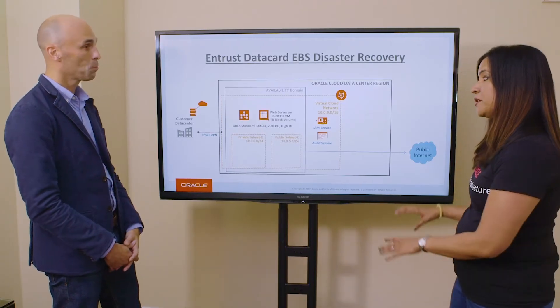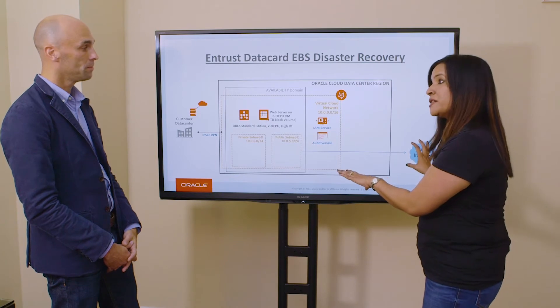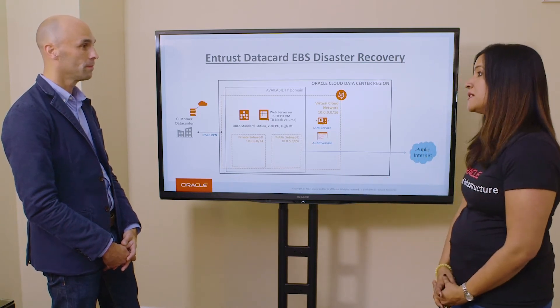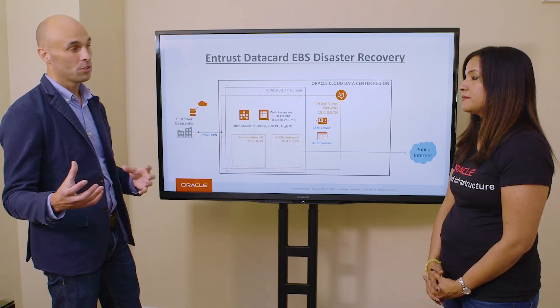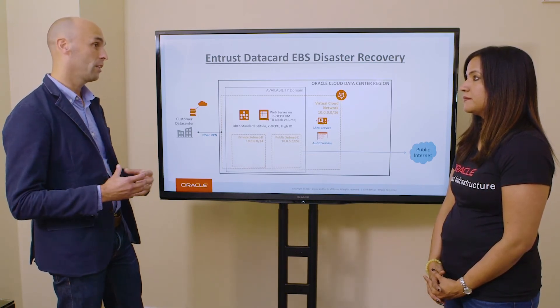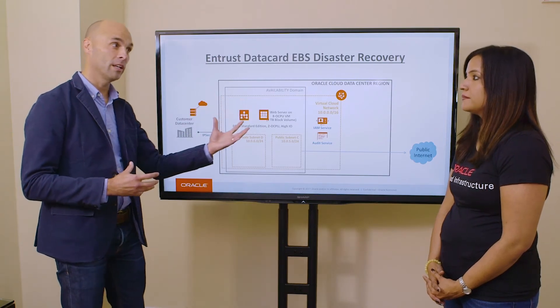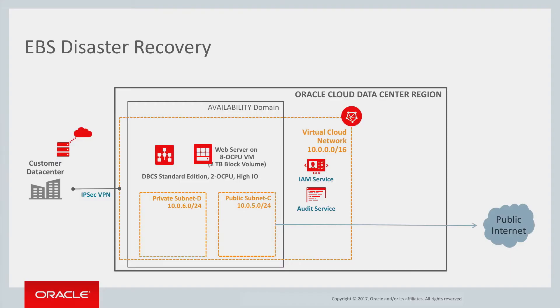That's great. Can we now talk about the access to internet? As I understand, your previous DR facility didn't allow the customers to access the location. Right. Our old facility did not have internet access, so in the event of a true disaster, our users wouldn't be able to connect through the internet. They would either have to connect through the corporate network if it was still there, or go to a facility that had internet connectivity. With the new OCI implementation, we were very easily able to create a public subnet and open that up for users to connect through the internet to our e-business suite.